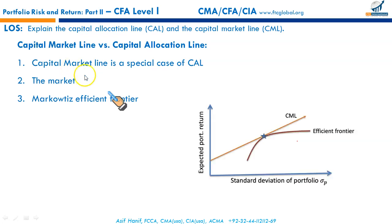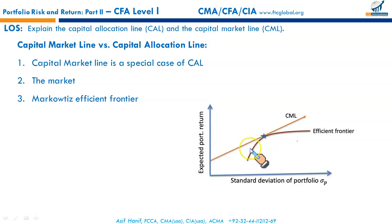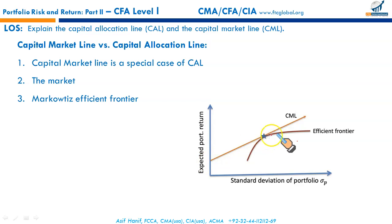From our previous reading, we know that the risk-return characteristics for the potential risky asset portfolio can be plotted to generate a Markowitz efficient frontier, as you can see here. The point where the risk-free asset is tangent to this Markowitz portfolio gives you the market portfolio. The line that connects the risk-free asset with the market portfolio is the capital market line.